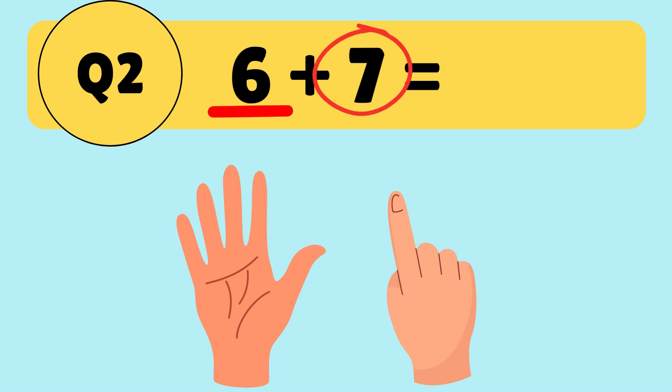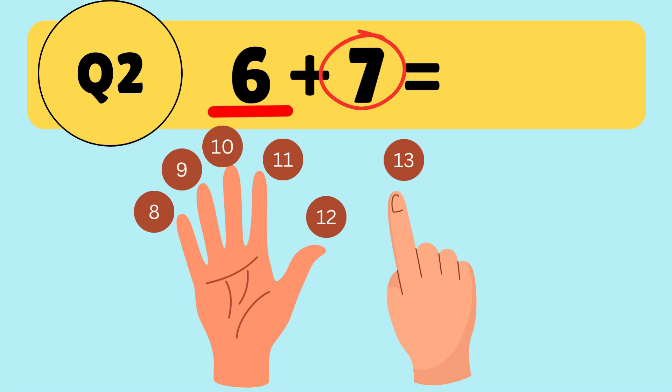Let's hold up 6 fingers and count from 7. Ready? 7, 8, 9, 10, 11, 12, 13. So 6 plus 7 is equal to 13. Great job!